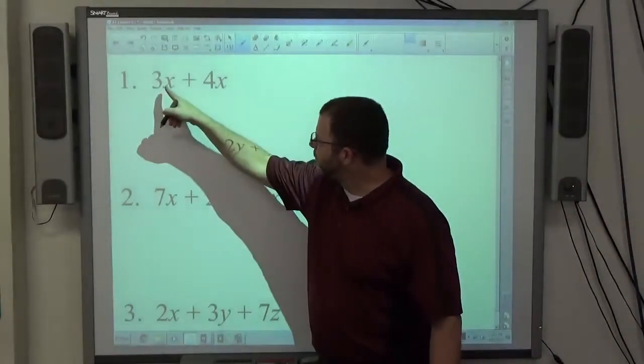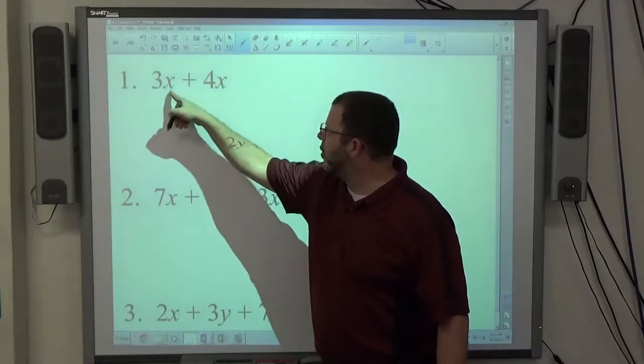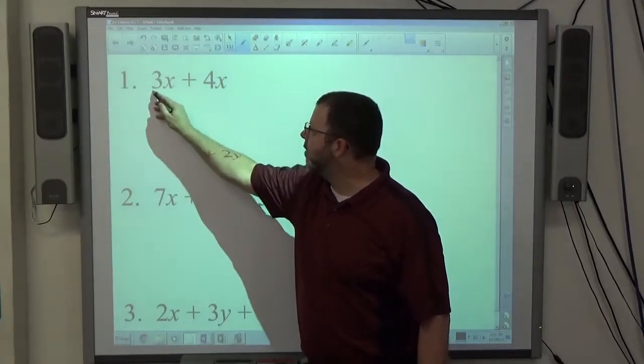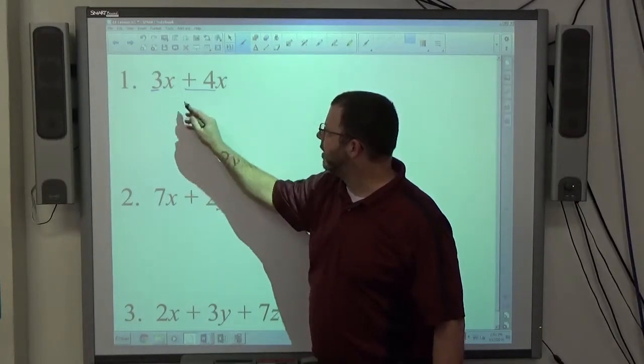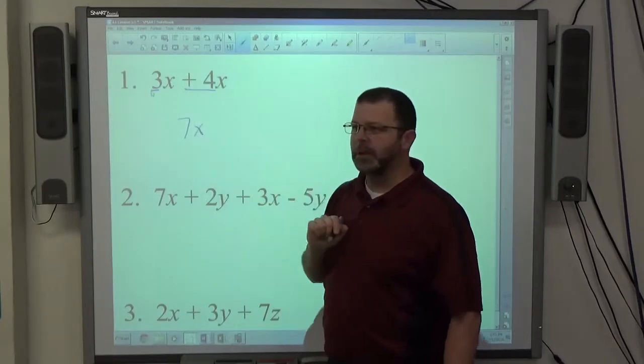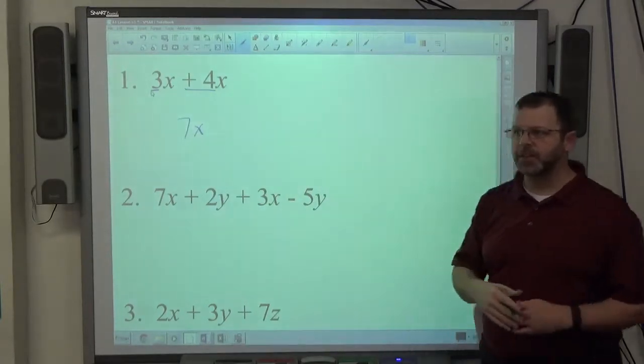So if you take a look at number 1 here, 3x and 4x both have x to the first power so we're allowed to add them. We add the 3 and the 4 to make 7 and then x to the first power is what made them alike. So that's what we get to 7x for that.